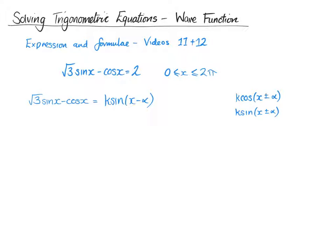But like I said already, if you're completely stuck and it doesn't give you which one to choose, choose any of them, they will all give you the same answer. It might just mean you've got a little bit more work to do, but it's not making it impossible. Right, so when we multiply that out, we get k sin x cos alpha minus k cos x sin alpha.